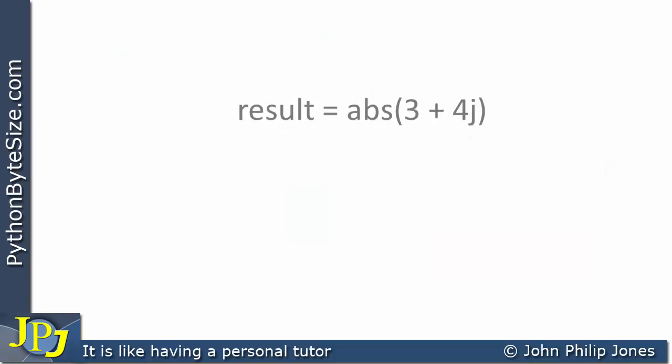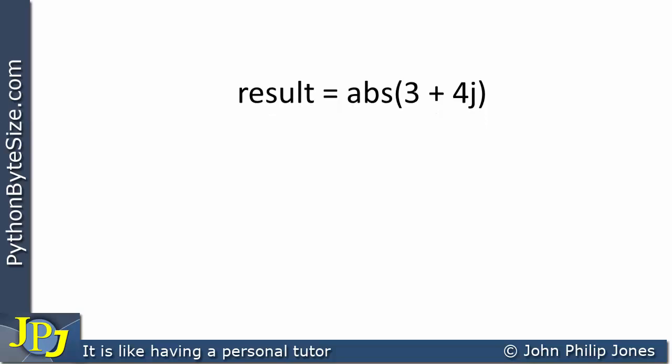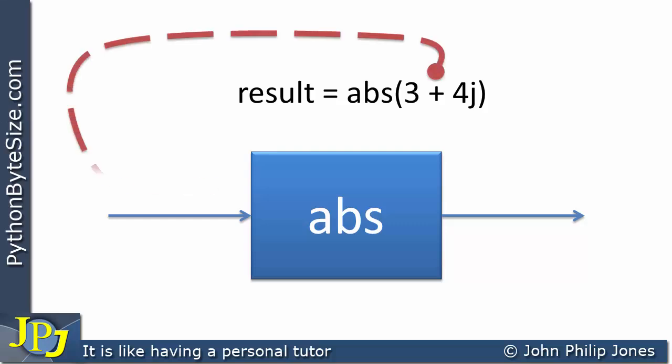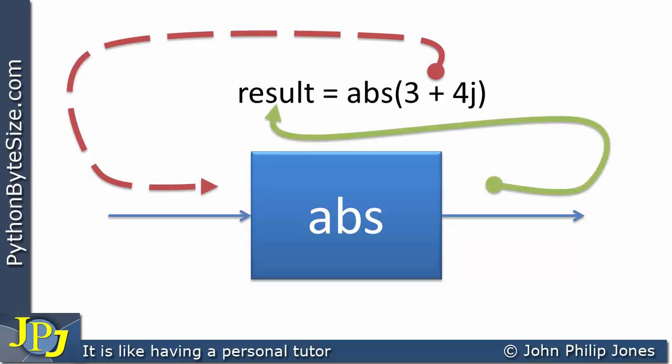Let's have a look at another example. Here result is assigned the absolute value of 3 plus 4j — a complex number type. Mapped onto the function diagram, that's the input and we get an output assigned to result. In this case, result is going to store the magnitude of the complex number, and the magnitude is 5.